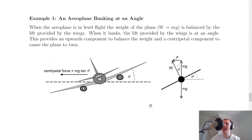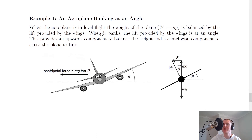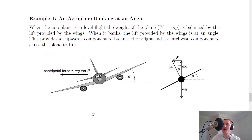Let's look at two examples where centripetal force maintains circular motion. First, an aeroplane banking at an angle. When in level flight, the weight W equals mg downwards is balanced by the lift provided by the wings. When the plane banks, the lift is at an angle, providing an upward component to balance the weight and a centripetal component to cause the plane to turn. Using SOHCAHTOA — tan theta equals opposite over adjacent — the centripetal force is given by F equals mg tan theta.